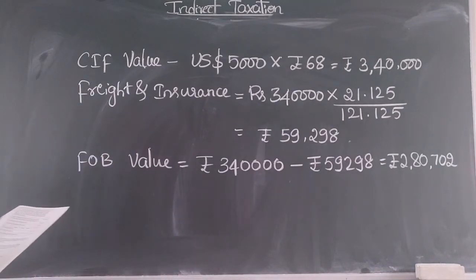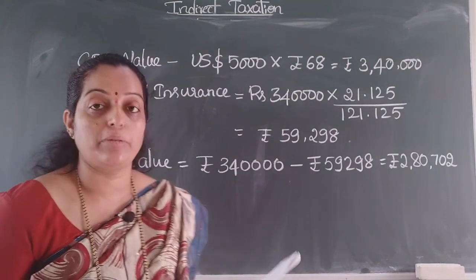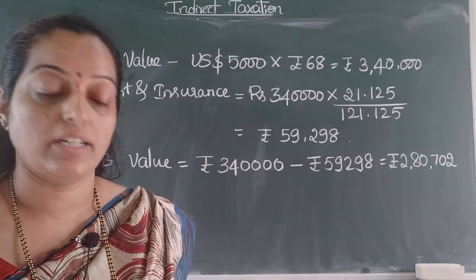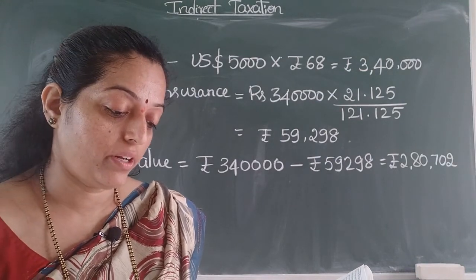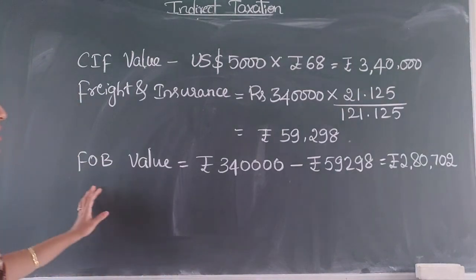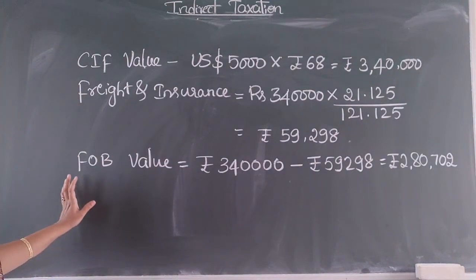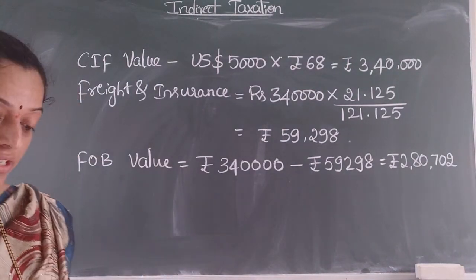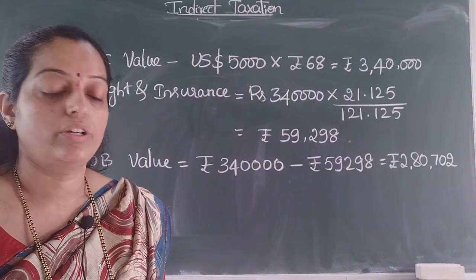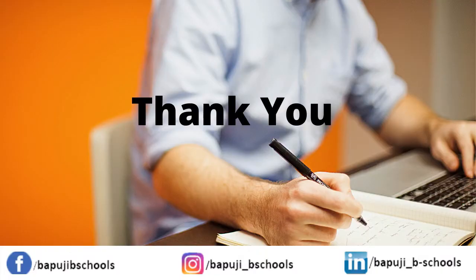So in this case, the exchange rate notified by CBIC has to be taken, that is 68 rupees per US dollar. And if insurance and freight are not given, we need to take 20 percent and 1.125 percent of FOB value respectively. Thank you.